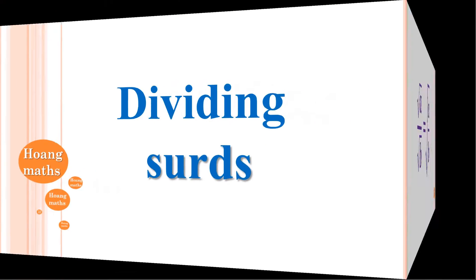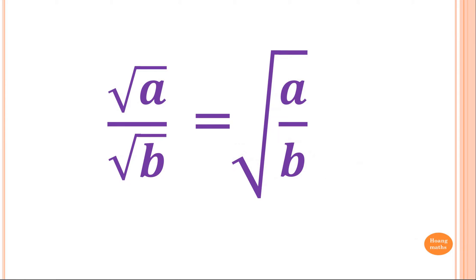Dividing surds. This is the rule we're going to apply: square root of a over square root of b is the same as square root of a over b.